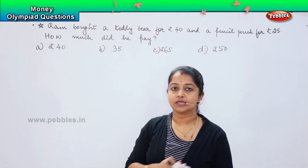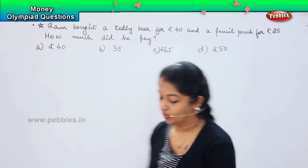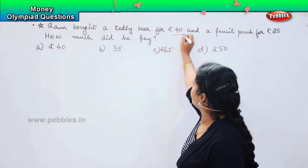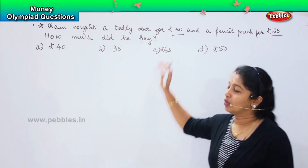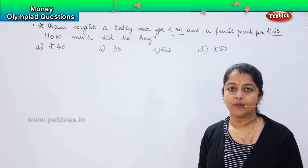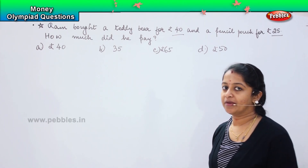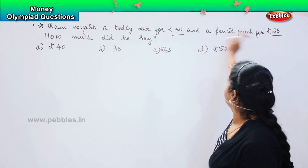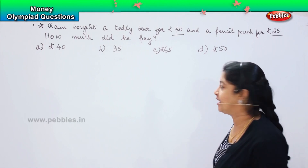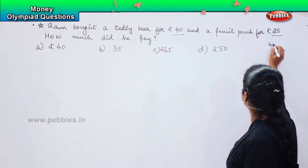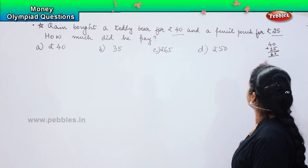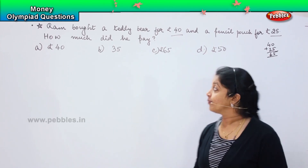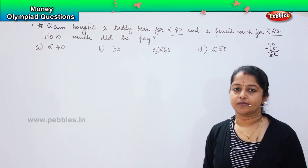He has purchased a teddy bear which was worth 40 rupees and a pencil pouch which is worth 25 rupees. So what is the total amount which he had to pay to the shopkeeper? We need to add them. So 40 plus 25: 0 plus 5 is 5 and 4 plus 2 is 6. So that means I have to pay 65 rupees in order to purchase both the items.